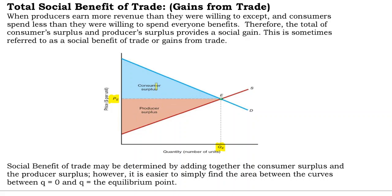If we combine the consumer surplus with the producer surplus, we have what are called the social benefits of trade. Remember, the consumer surplus is a positive thing for consumers.